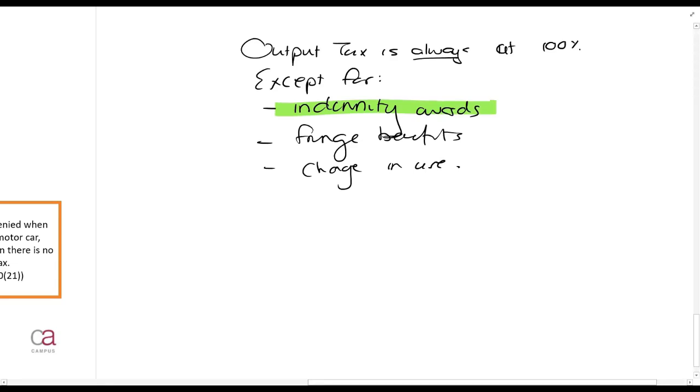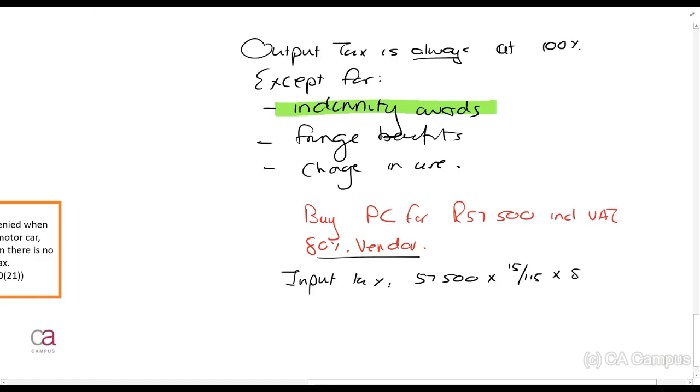So what does that mean? Let's say I buy a PC, a computer, for 57,500 including VAT. You are an 80% vendor. What is the input tax that you would claim? Input tax is 57,500 times 15/115. I'm an 80% vendor. So assume this is for the entire business. I can only claim 80% of that. 6,000.